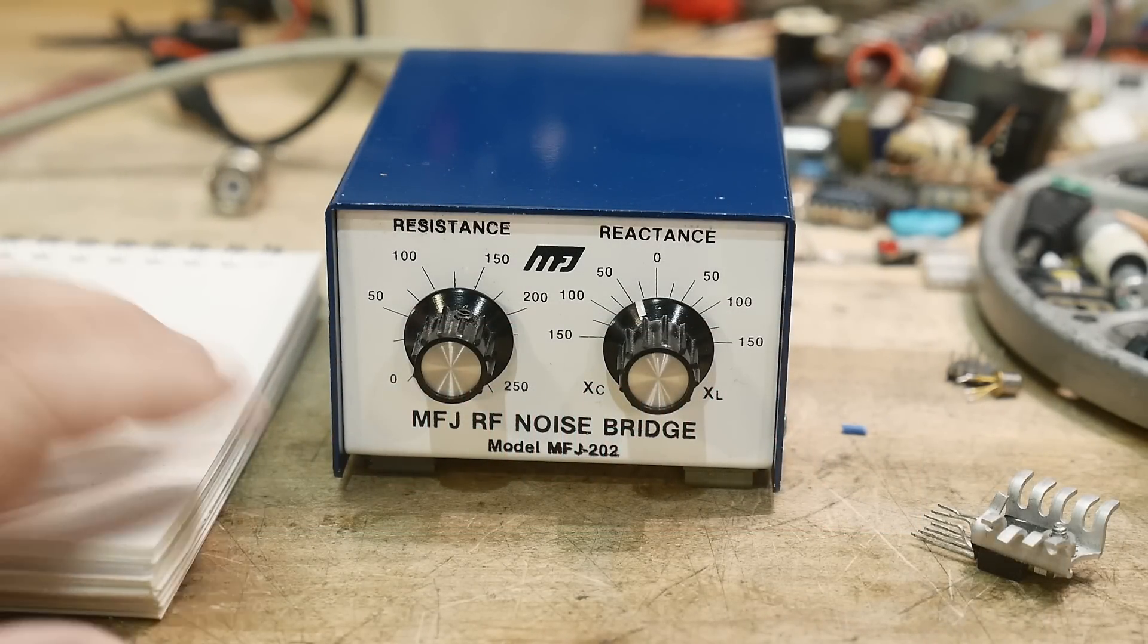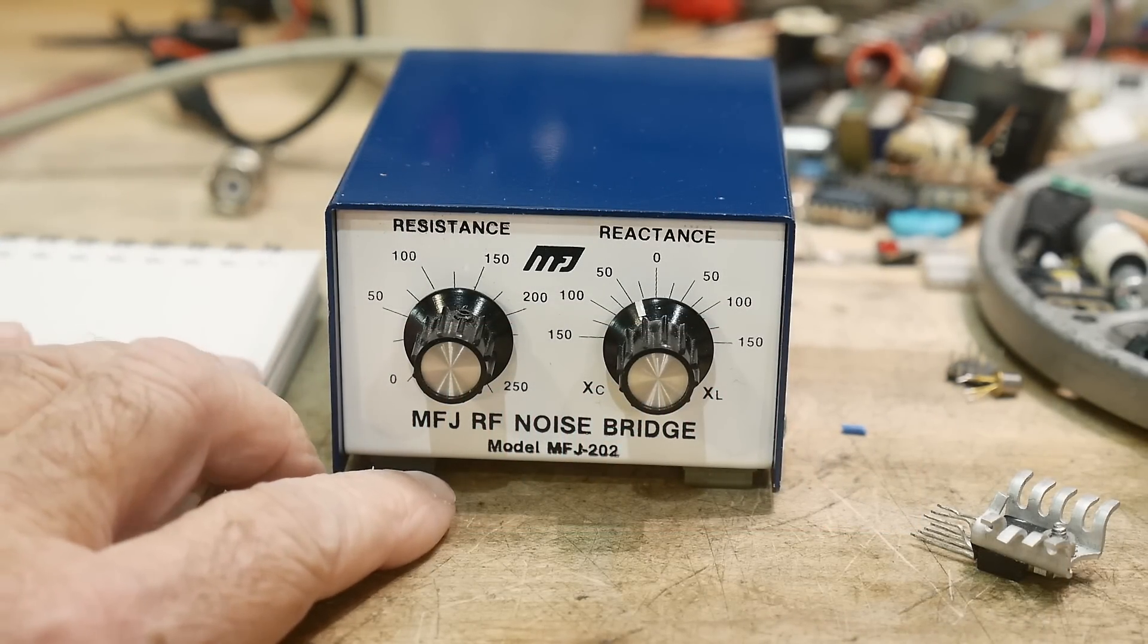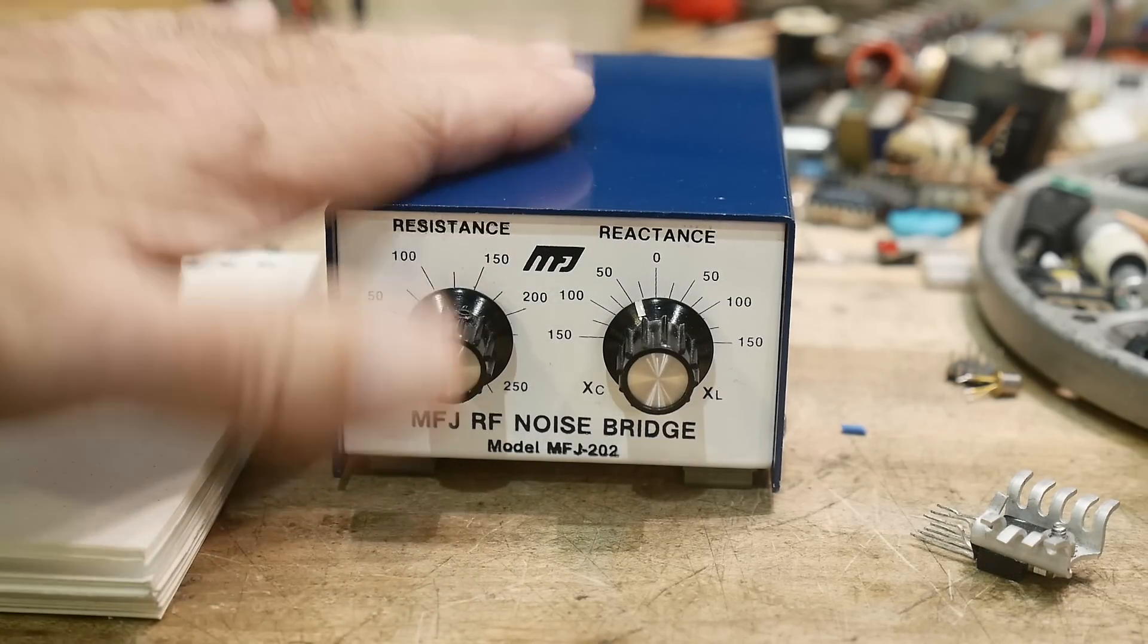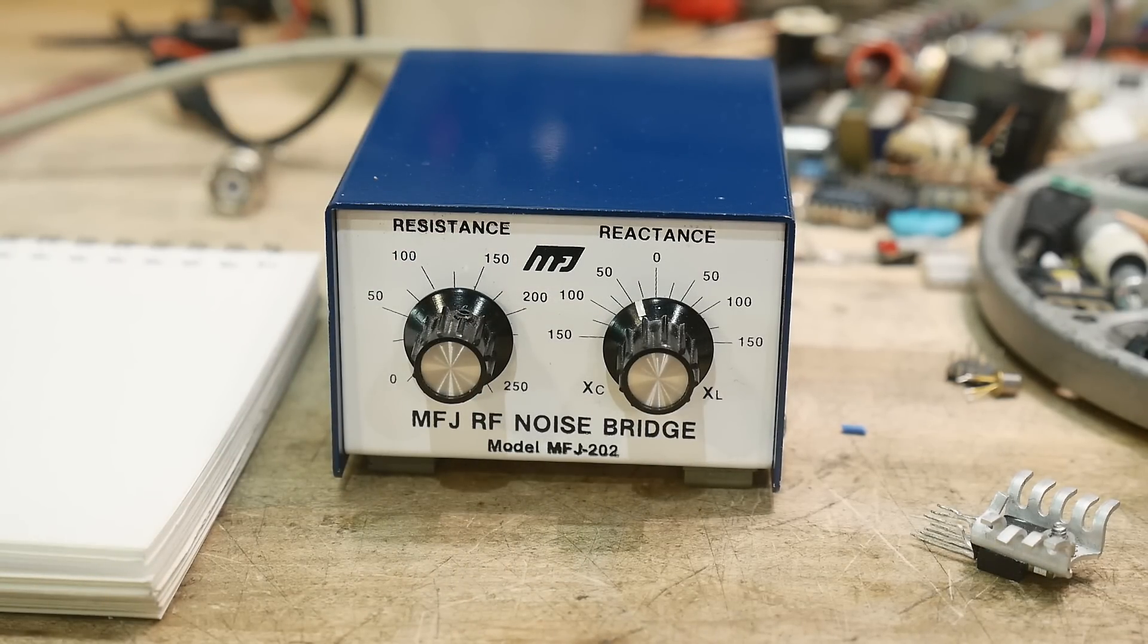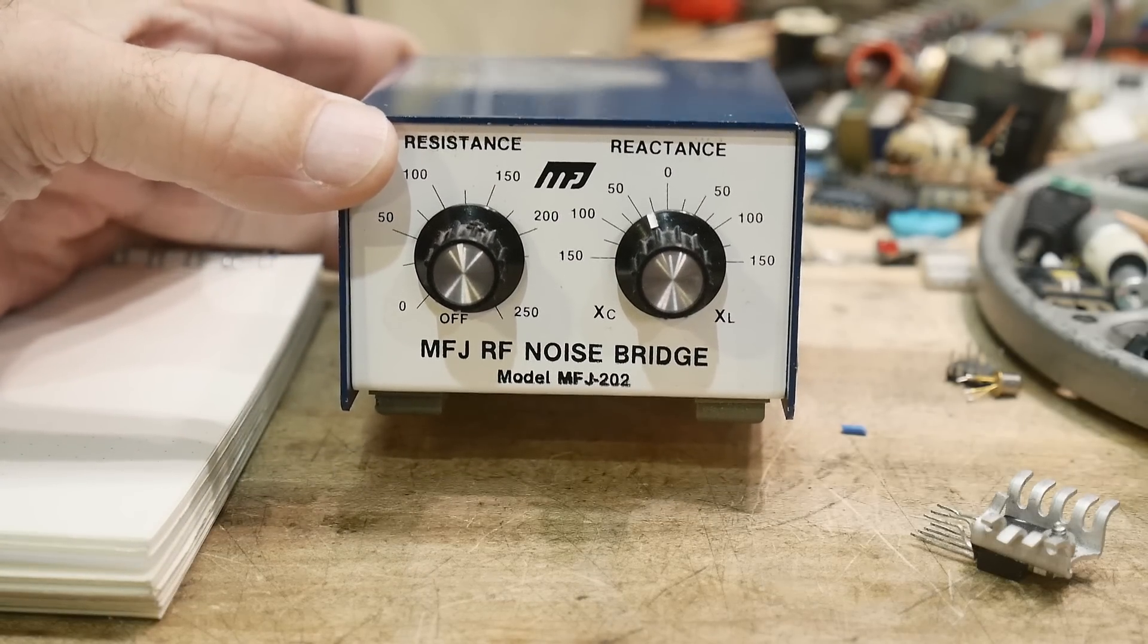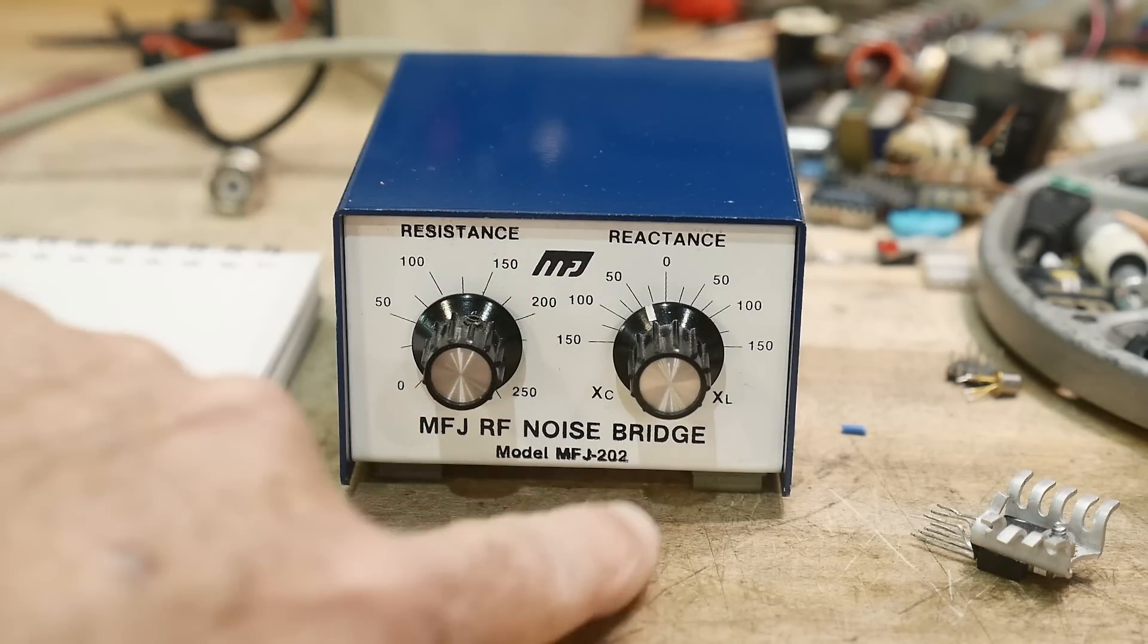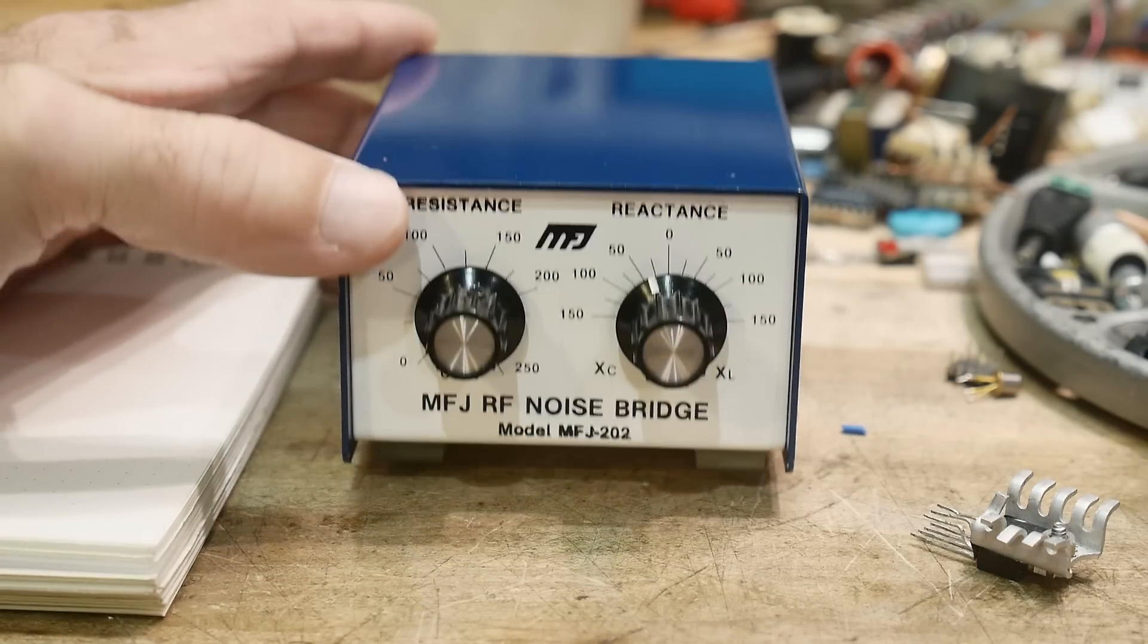All right, what's on the bench today? It is an MFJ noise bridge. This is super old-school, but I thought it would be instructive. I keep talking about bridges and how they're so important in electronics. So this is a model MFJ 202, not the B version, the old-school version.